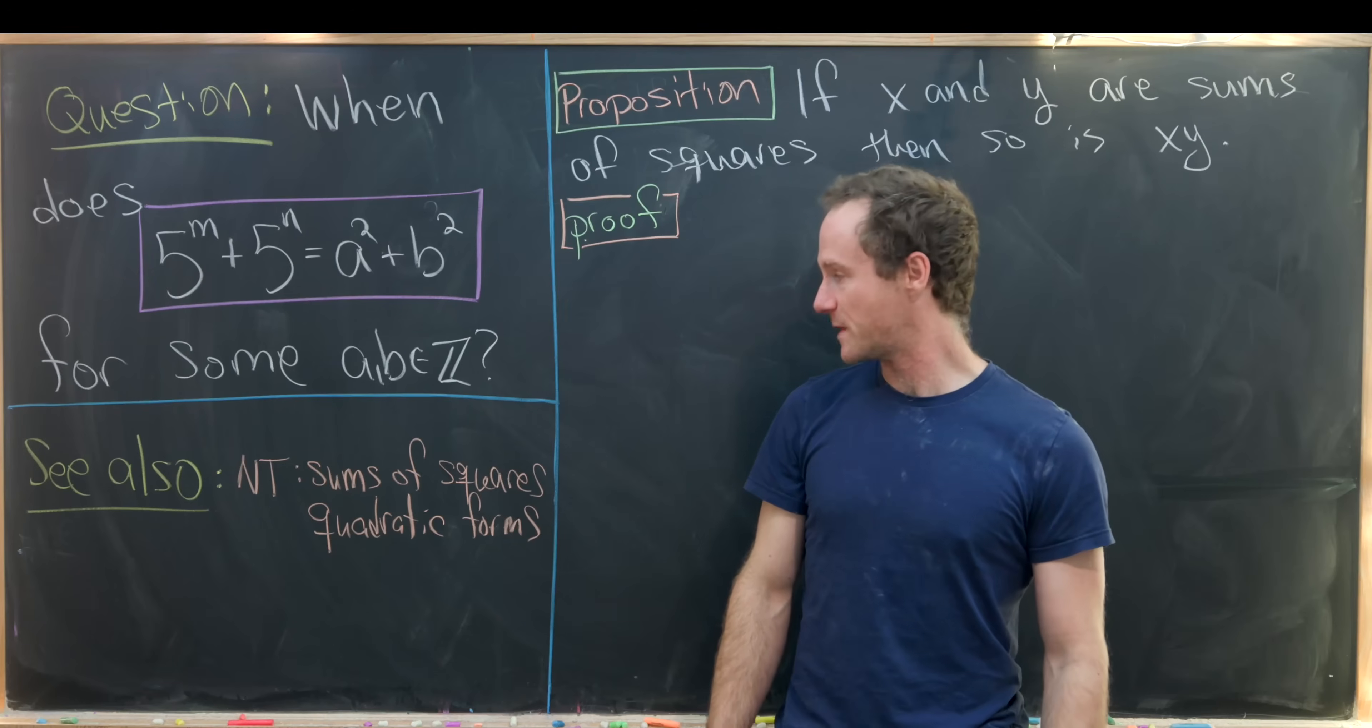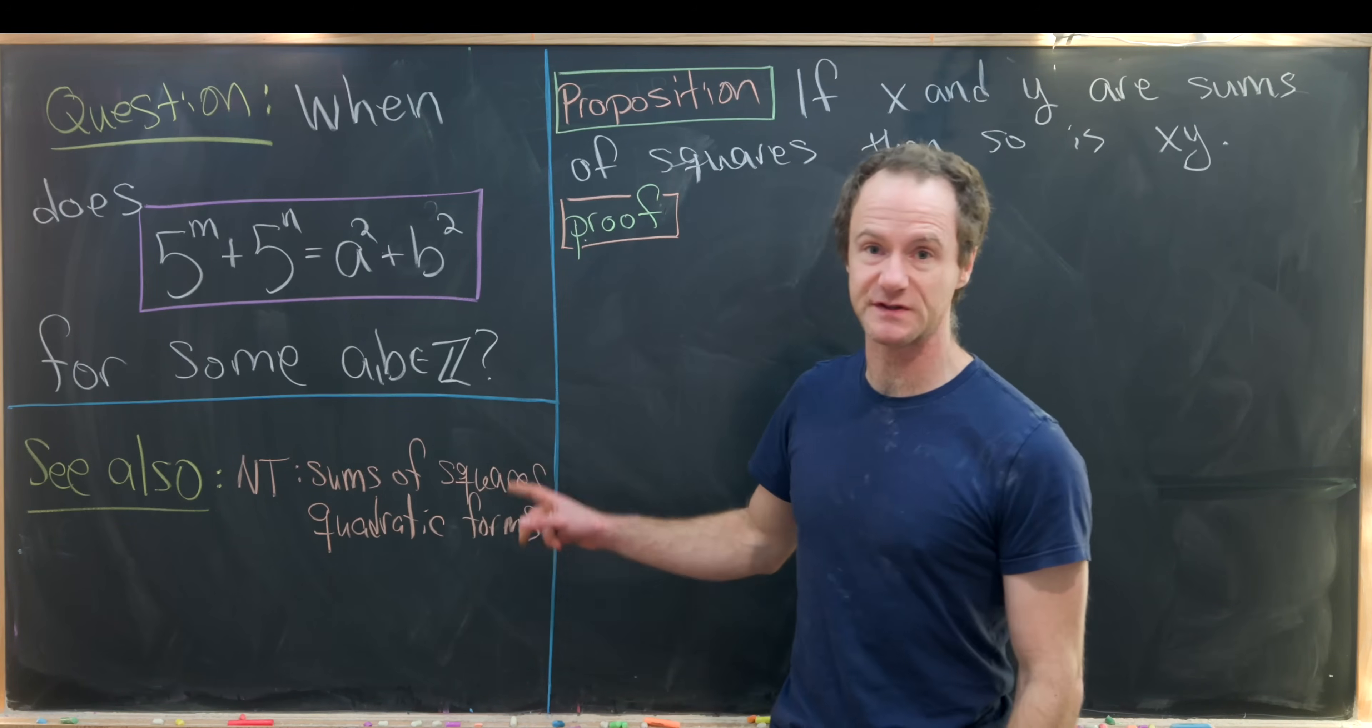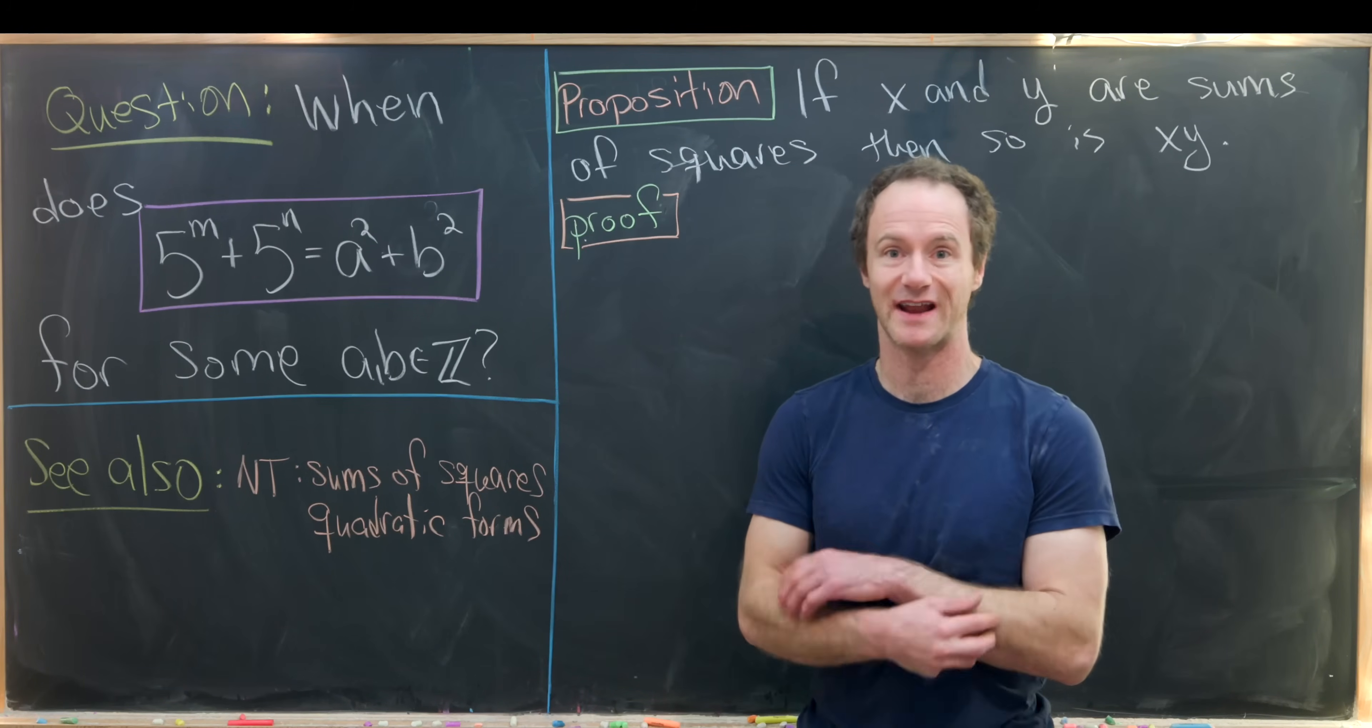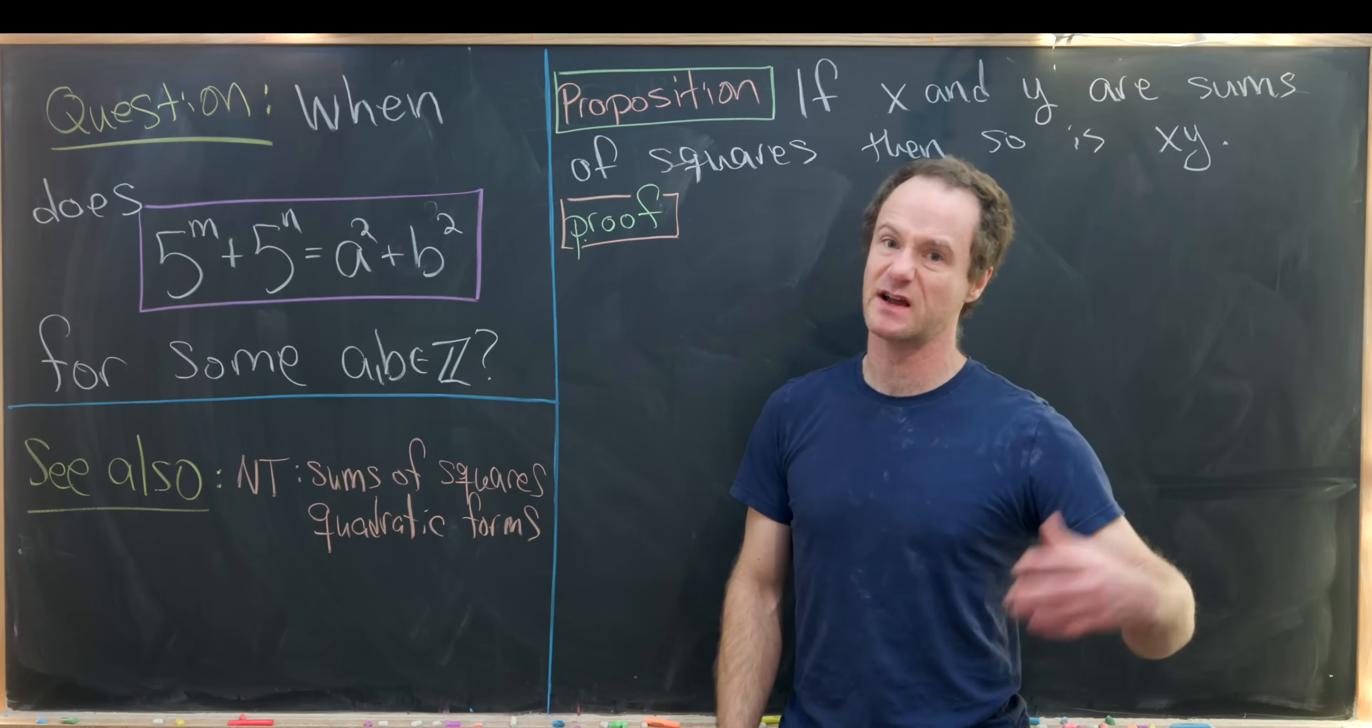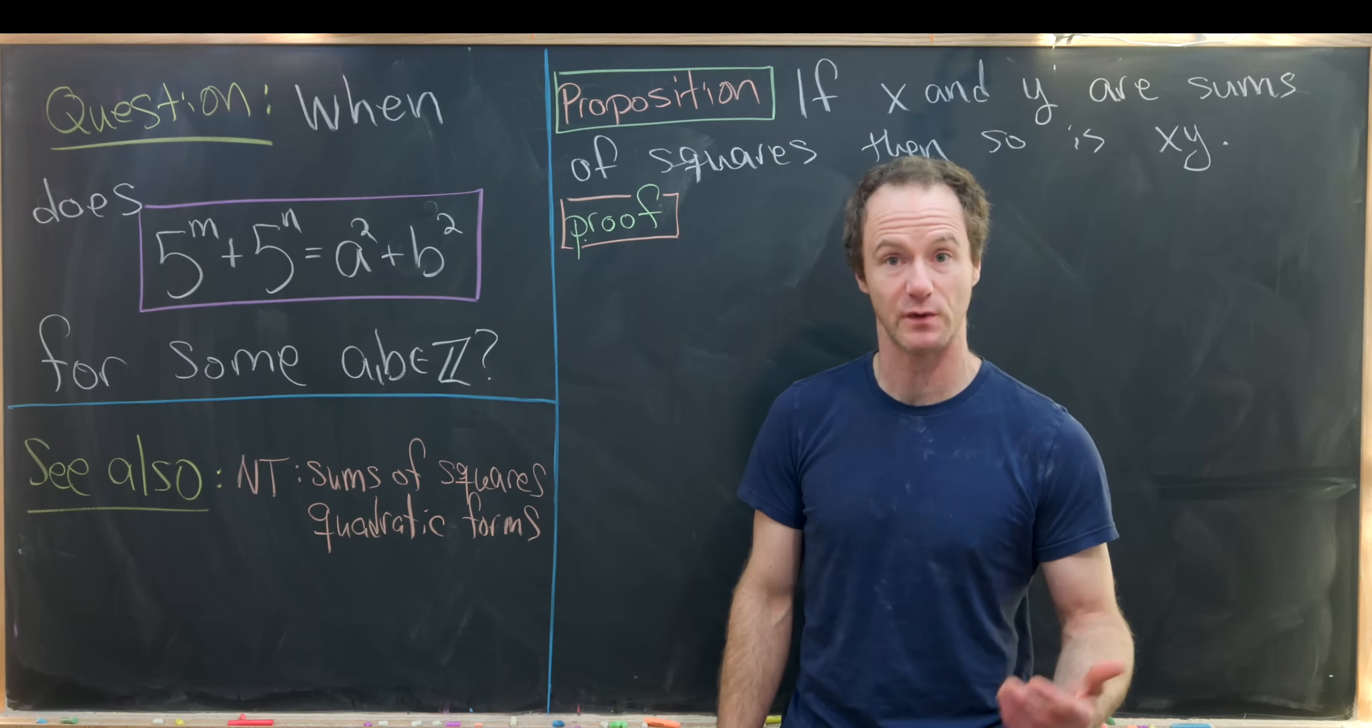If you want some more information on this topic I would look up number theory, sums of squares, which is generally a chapter in every number theory book, or more generally quadratic forms. In both of my number theory playlists I go over sums of squares if you want to check those out.